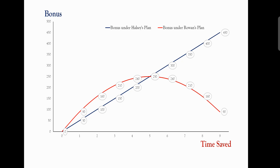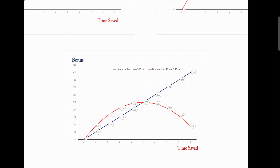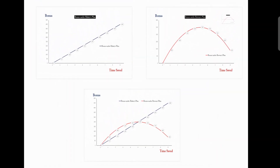If we compare the two plans on the graph, initially the red line (Rowan) shows a higher bonus than the blue line (Halsey), and they meet at 50% time saved. These are different plans with different formulas and calculations. In the next session we will concentrate on further aspects. Thank you.